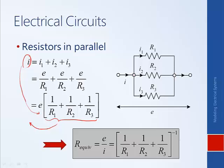We can also apply a bit of mathematical manipulation to show that this is also equal to R1 times R2 times R3, divided by (R2 times R3 plus R1 times R3 plus R1 times R2). Understanding how to reduce resistors in series and in parallel will be helpful when we discuss impedances later in this module.